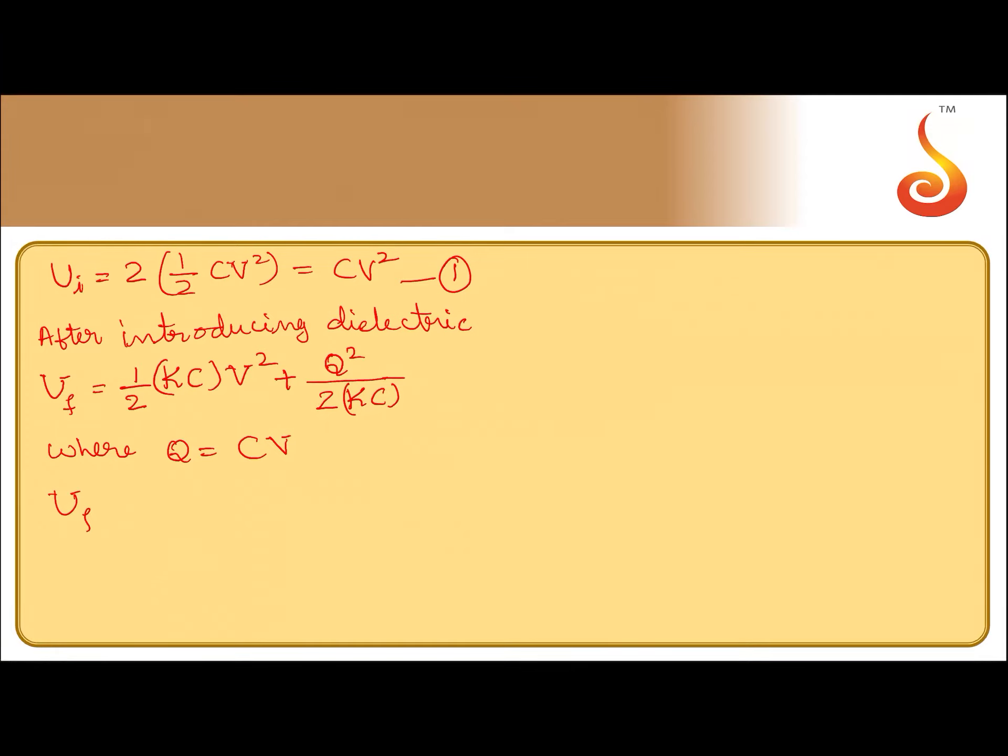Substitute that here, U_f is equal to half KCV square plus C square V square divided by 2KC. C C get cancelled, we can take out half CV square common, you will be left with K plus 1 by K, this is final energy.